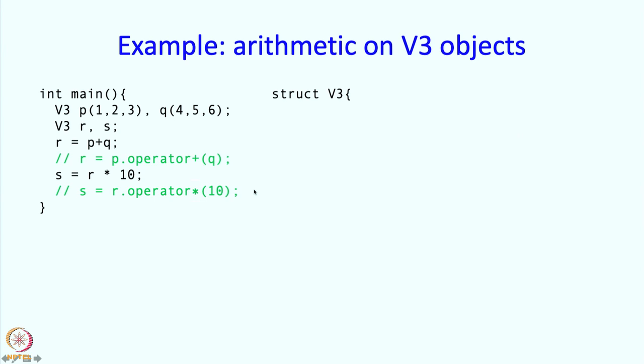So how does this whole thing work? So struct v3 if you remember has these 3 parts x, y, z, 3 members x, y, z.